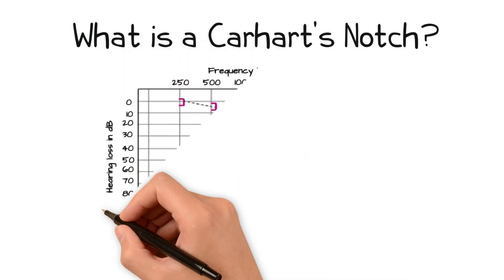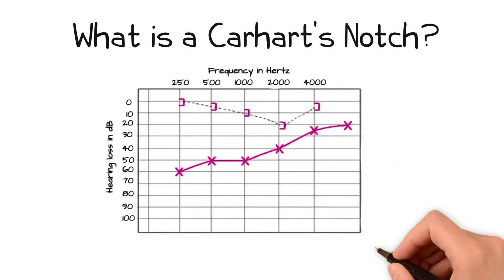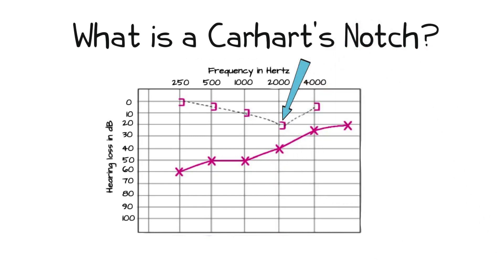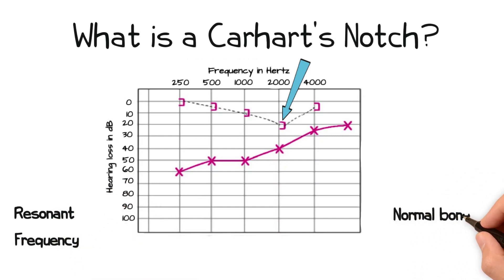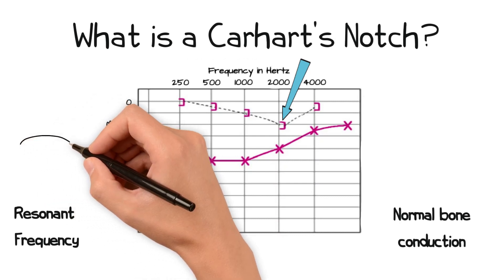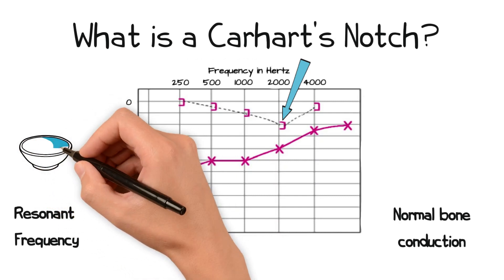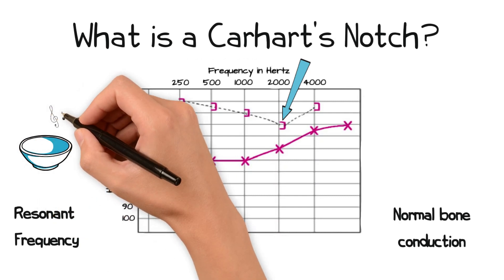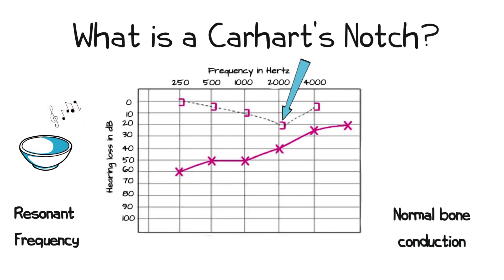The classical type of hearing loss seen with otosclerosis is a conductive hearing loss with an artifactually reduced bone conduction threshold at 2 kHz, known as Carhartt's notch. In order to understand the cause for Carhartt's notch, we must first understand what resonant frequency means, along with the mechanisms of normal bone conduction. Any object or system has a natural resonant frequency — a frequency where the object or system vibrates at a higher amplitude. The resonant frequency of the ossicular chain is 2300 Hz, or approximately 2 kHz.